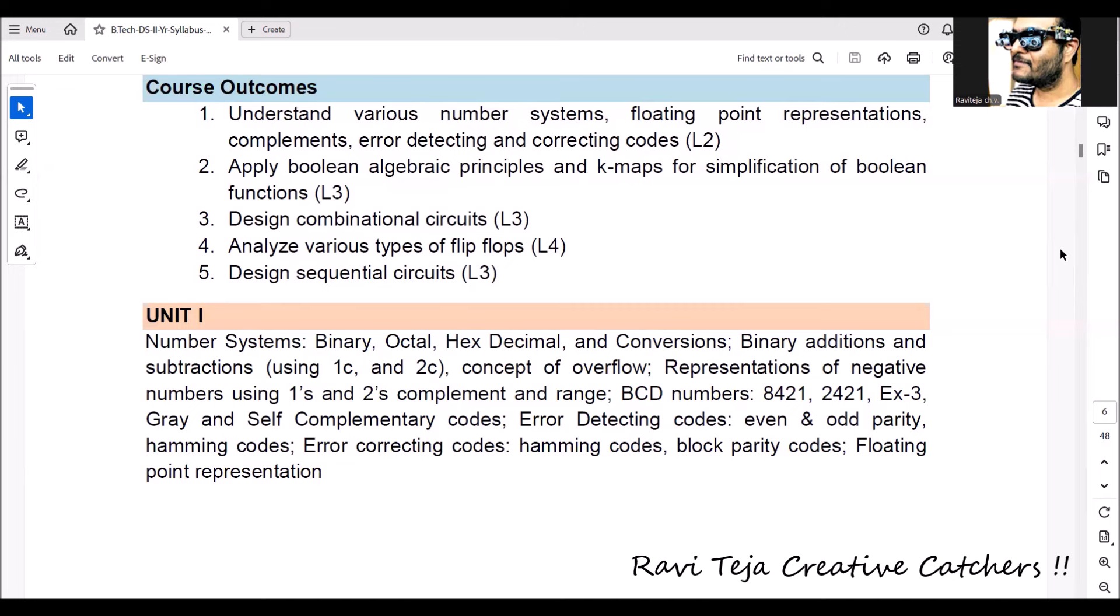The major important one is we are going to learn about even and odd parity. We will be checking or correcting the codes with respect to the Hamming techniques. These basics are covered in Unit 1.